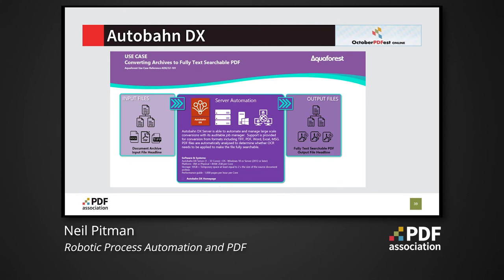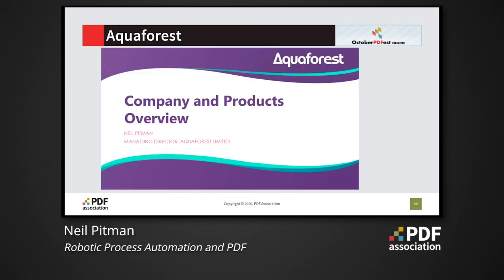Finally, our AutobahnDX product is a digital transformation product capable of processing millions of documents. It's commonly used to convert documents from a range of types including Microsoft Office, image, and image PDFs into compressed, fully text-searchable PDF/A files. Thank you for watching this session — we hope it's proven useful and interesting.